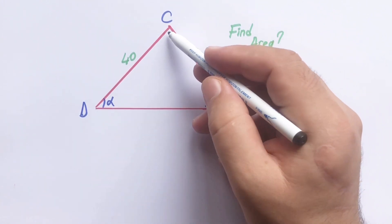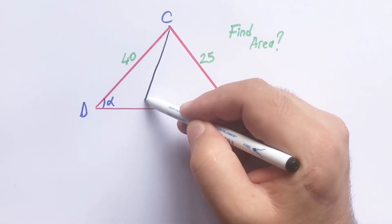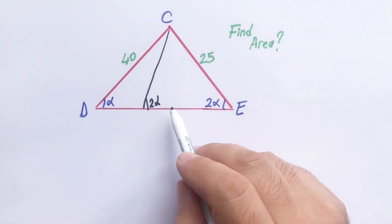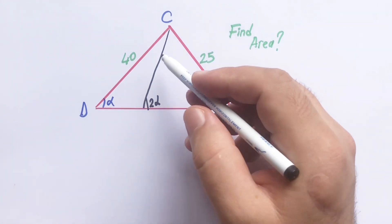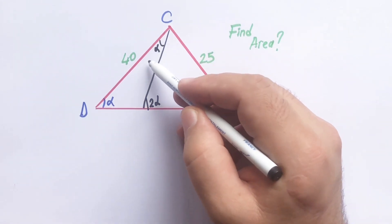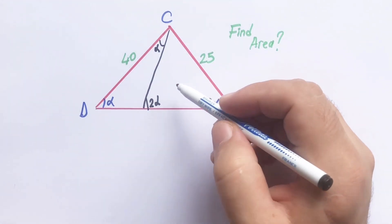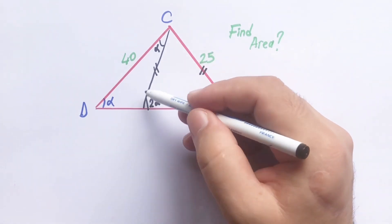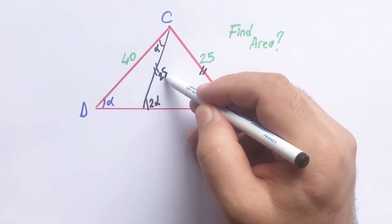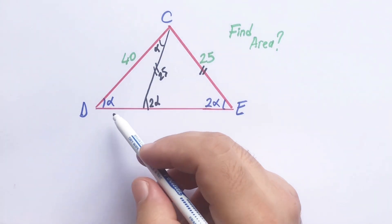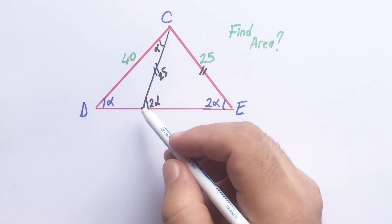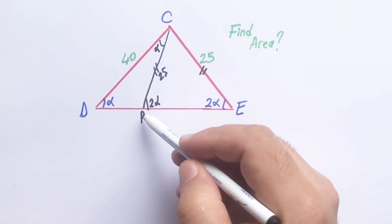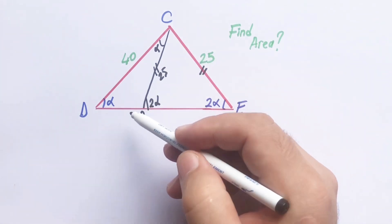First step, I want to get an isosceles trapezoid, therefore this angle must be alpha and these two sides must be equal. Let's call here P-point; DP is also 25 units.